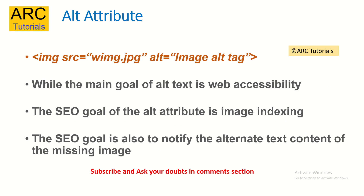The next one is the alt attribute. A lot of times we have images, and most people just add the src tag which is the source, but they do not provide the alt tag. Alt gives context about the image to search engines. It also helps in two ways: if the image is missing, the alt text would be displayed, and for search engines, they will understand the context of what the image is about. For example, if you are showing an image of a sun, you can put alt equal to 'sunrise'. This gives meaning to the image and helps in image indexing. Make sure that whenever you add any image tag, you provide an alt attribute.